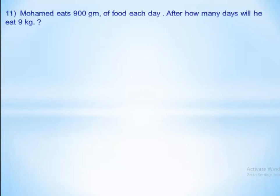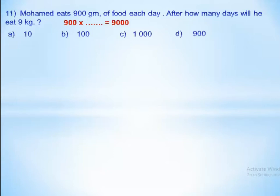Muhammad eats 900 grams of food each day. After how many days will he eat 9 kilograms? We must convert 9 kilograms to grams: 9 kilograms equals 9,000 grams. Then 900 times which number equals 9,000? The answer is times 10, because we have one extra zero.